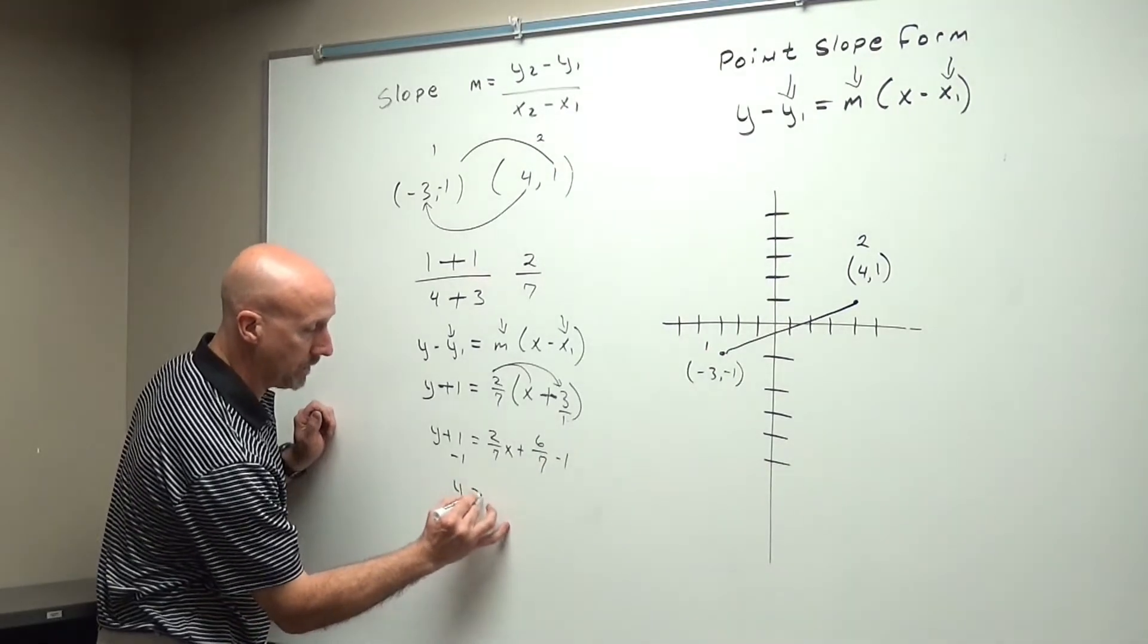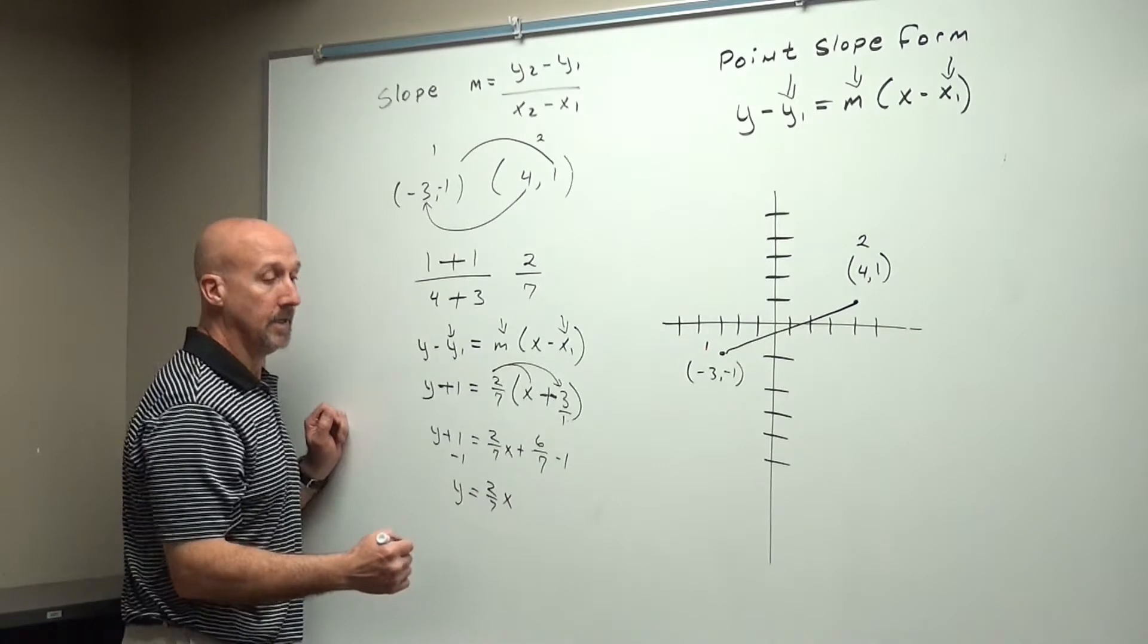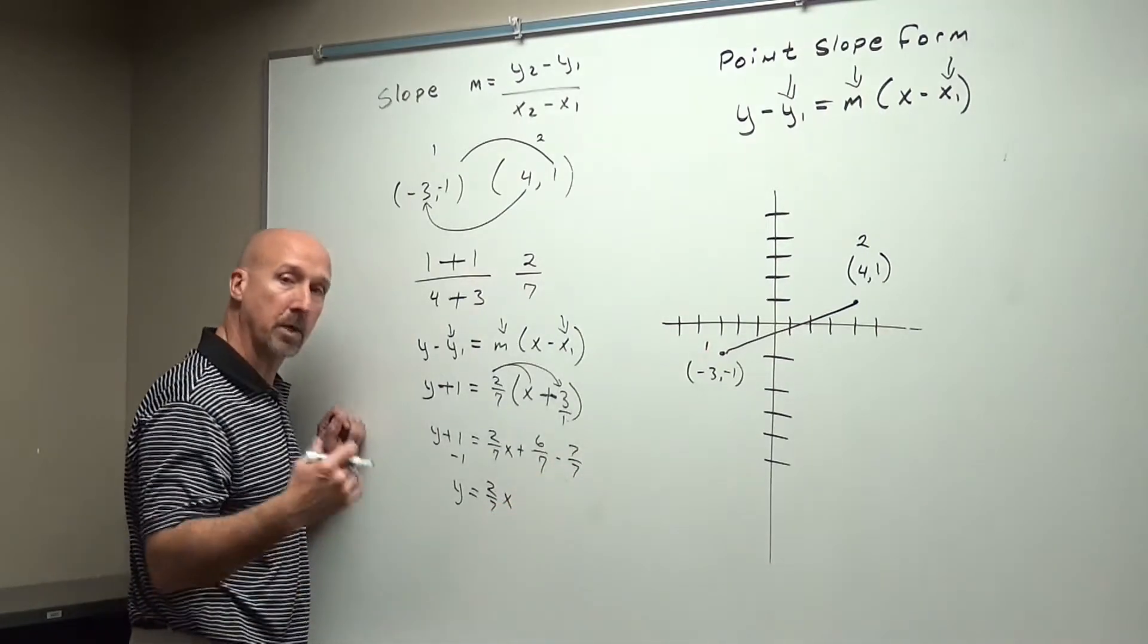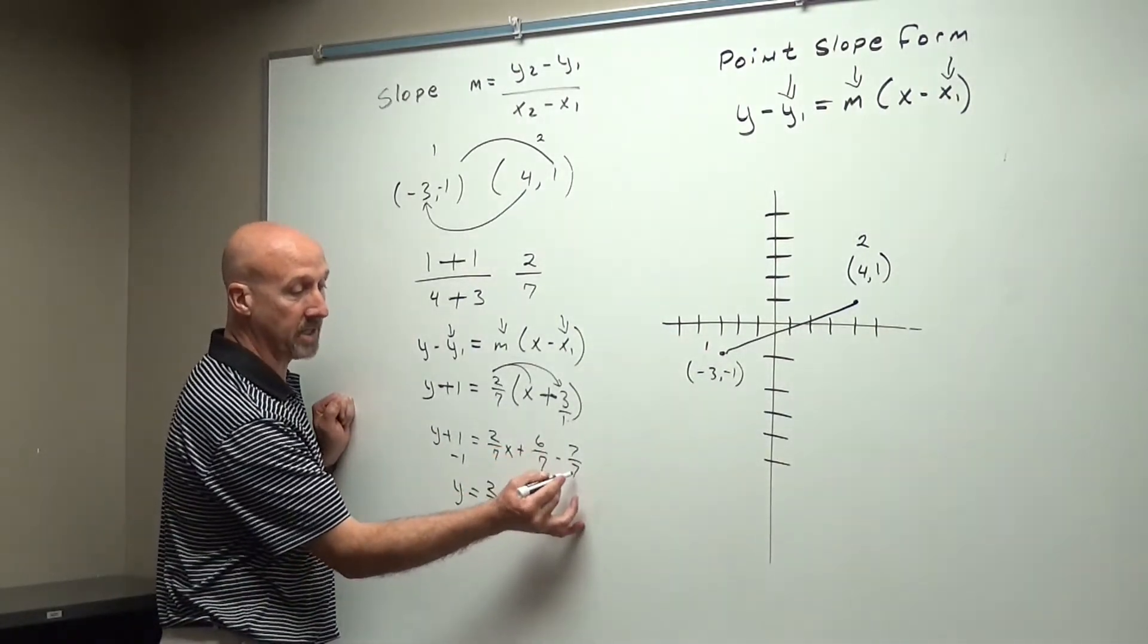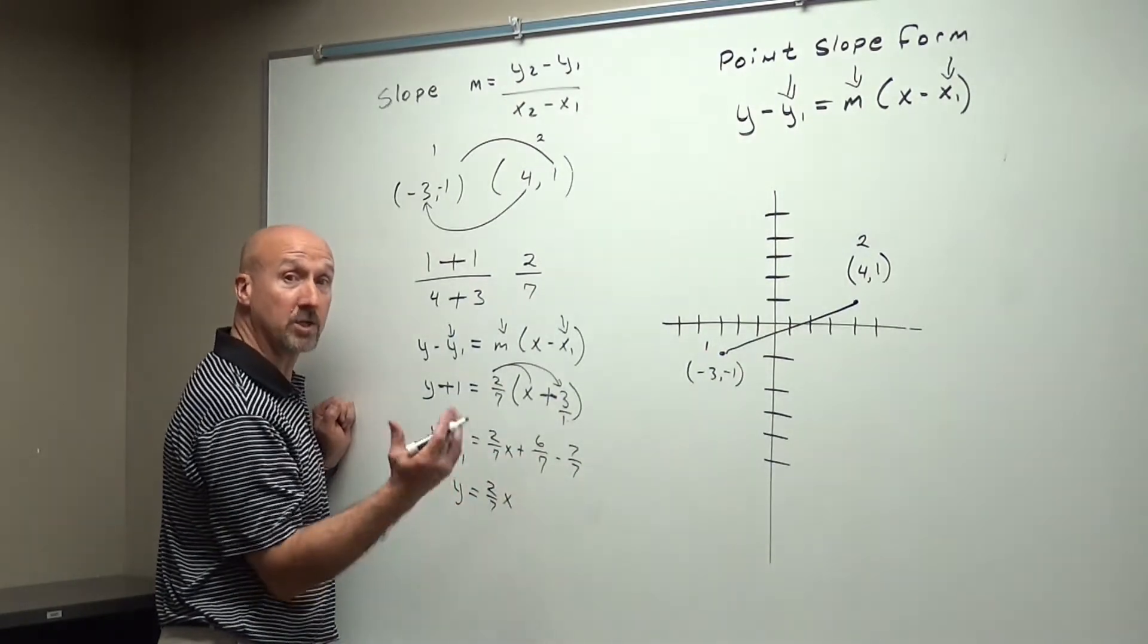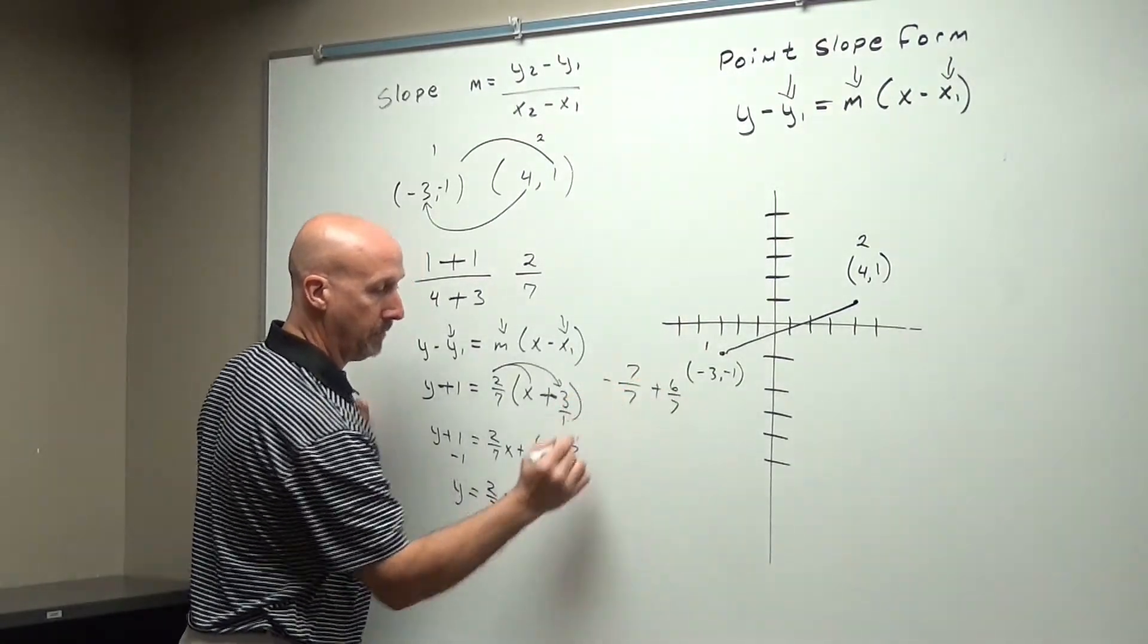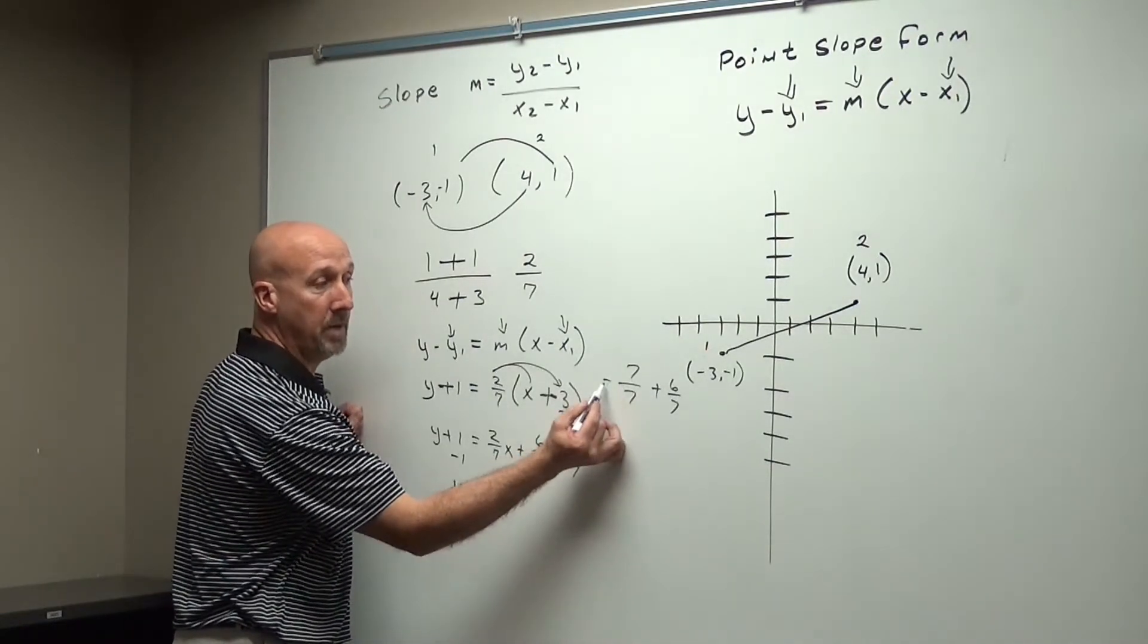So I have y equals 2 over 7 x. Now we have to do the math here. So 1 can also be written as a fraction 7 over 7. You can punch it in a calculator however you want to do it. But now we have 6 sevenths minus 7 over 7. So if they're different signs, one's positive, one's negative, we're going to subtract the two.